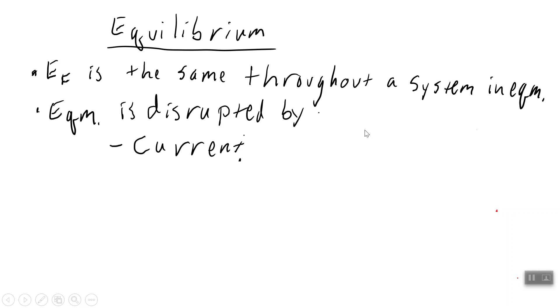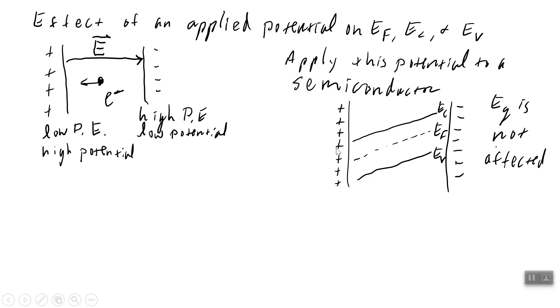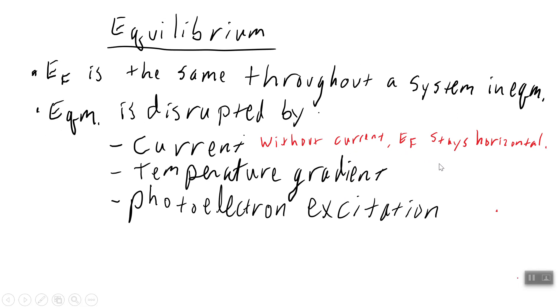And equilibrium is disrupted by several things, the electric current, which certainly would result from applying that electric field. So without current, yeah, Fermi energy just stays horizontal. But as soon as you start letting current flow through, which would be the case here, if you're going to have the electric field across something that's conductive, you're going to have current going through there. A temperature gradient across the semiconductor disrupts equilibrium. If I hit the semiconductor with a bunch of light and knock a bunch of electrons up to the conduction band, it will leave equilibrium.